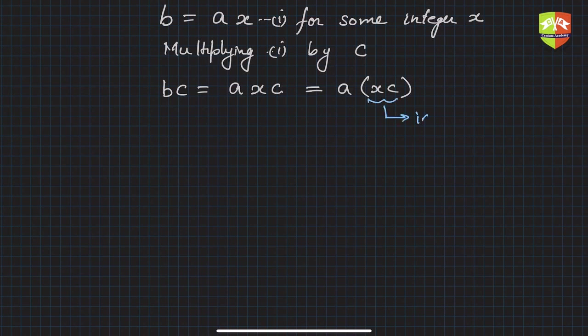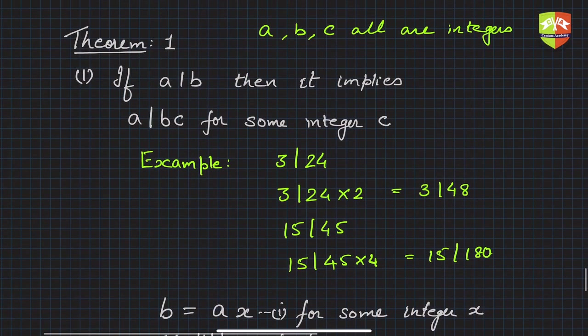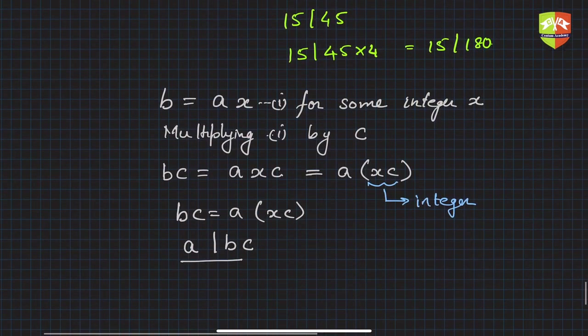Now xc is itself an integer, since x was an integer and c was an integer — the product of two integers is always an integer. So we have bc = a times (xc), which by the definition of divisibility means a divides bc. This proves sub-part one of the theorem.